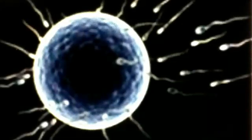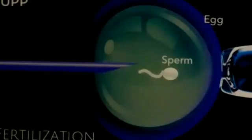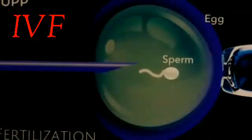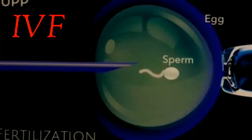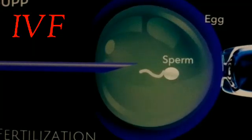If couples want children, scientists have developed some scientific technologies. The first technology is IVF. IVF technology is used when there is a problem in the path of the oviduct, or when the sperm count is less. In this technology, the embryo is developed in a test tube and then implanted in the uterus of a woman.